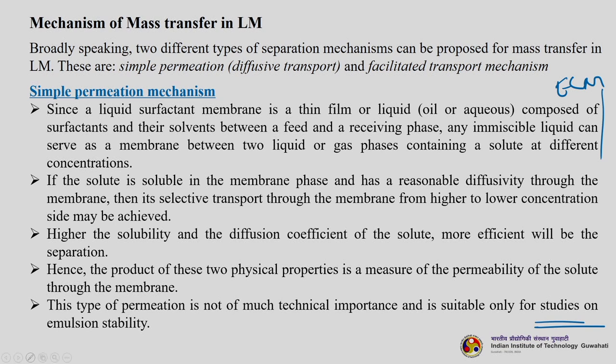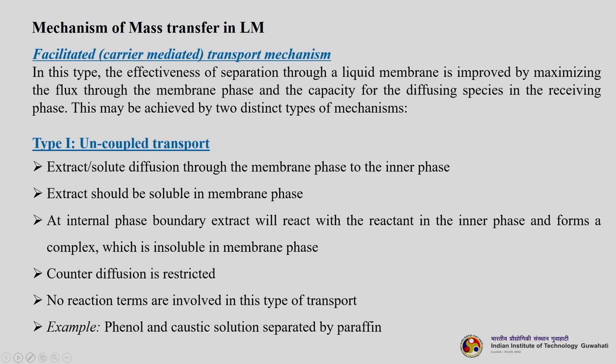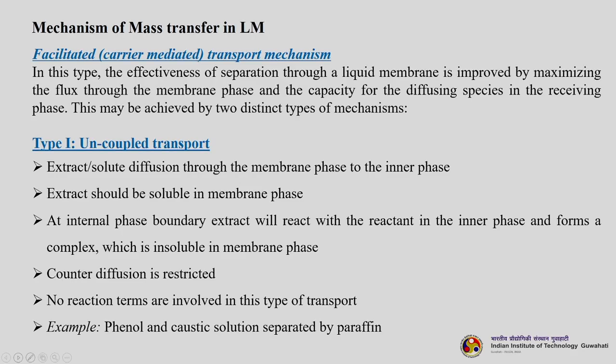The next mechanism is facilitated or carrier mediated transport. Here the effectiveness of separation is improved by maximizing flux through the membrane phase and the capacity for the diffusing species in the receiving phase. Two distinct mechanisms exist. The first is uncoupled transport: the solute diffuses through the membrane phase to the inner phase; the solute must be soluble in the membrane phase; at the internal phase boundary the extract reacts with a reactant in the inner phase and forms a complex insoluble in the membrane phase, restricting counter diffusion. No carrier is involved. A classic example is phenol and caustic solution separation using paraffin.